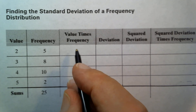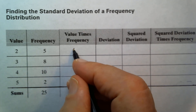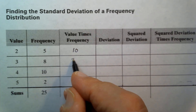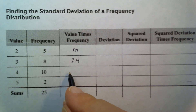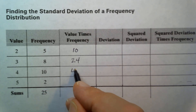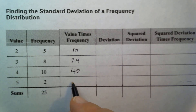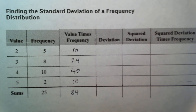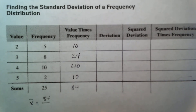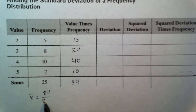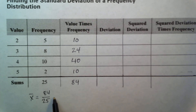Value times frequency is straightforward: 2 times 5 is 10; 3 times 8 is 24; 4 times 10 is 40; 5 times 2 is 10. The sum is 84, so the mean x-bar is 84 divided by 25 (the sum of the frequencies), which equals approximately 3.36.